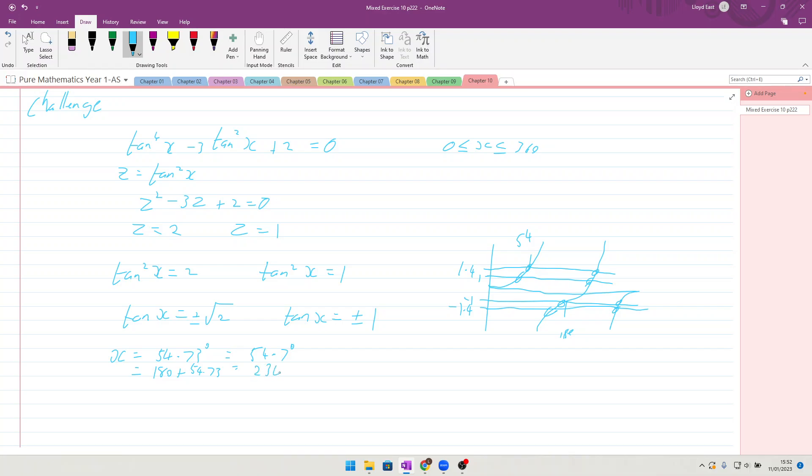That gives us this solution. And now we need to look at 180 - 54, so 180 - 54.73 = 125.3°. And also 360 - 54.73 = 305.3°.